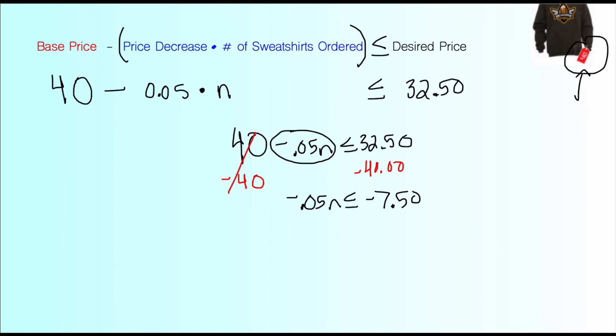And now, from here, my last step is going to be to divide by negative 0.05. So that's going to eliminate it on this side. And I'm going to do the same thing to the other side. One thing I'm noticing is that I'm dividing by a negative, which means that my inequality symbol is going to flip. I'm dividing by negative 0.05. So I have to flip my symbol to become greater than or equal to, instead of less than or equal to. And then negative 7.5 divided by negative 0.05 is 150.